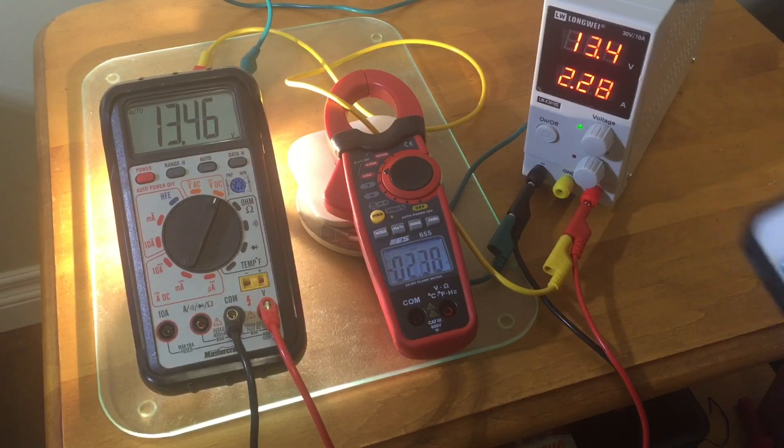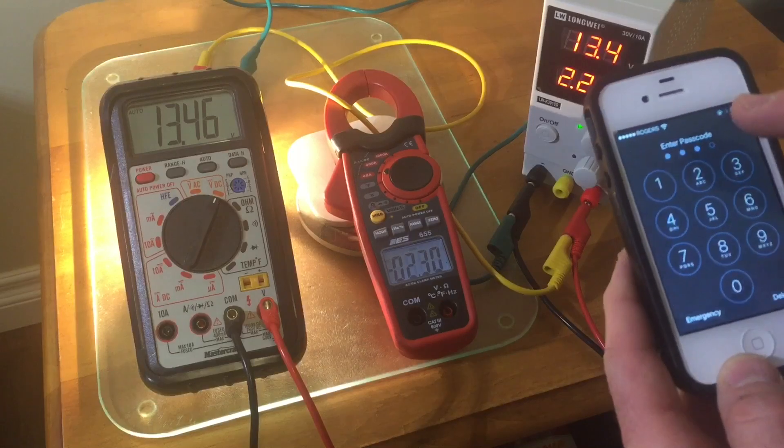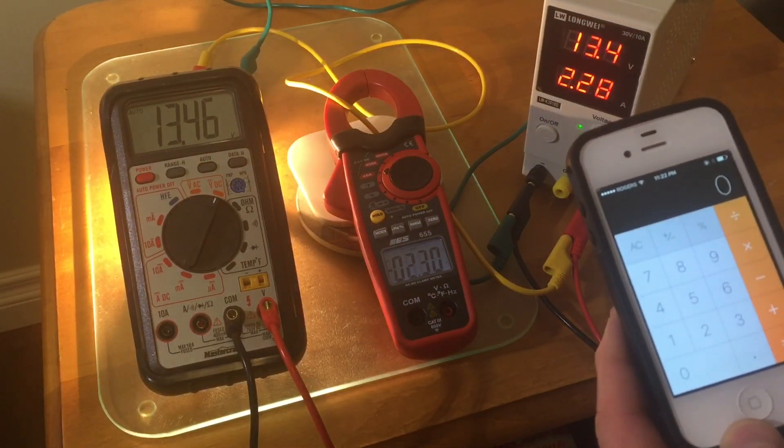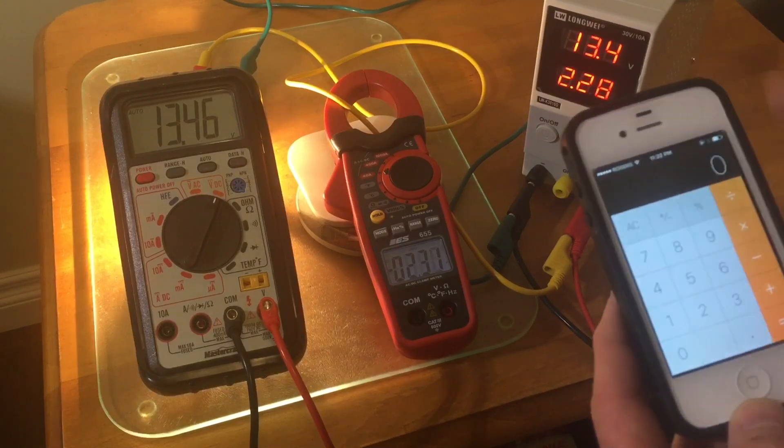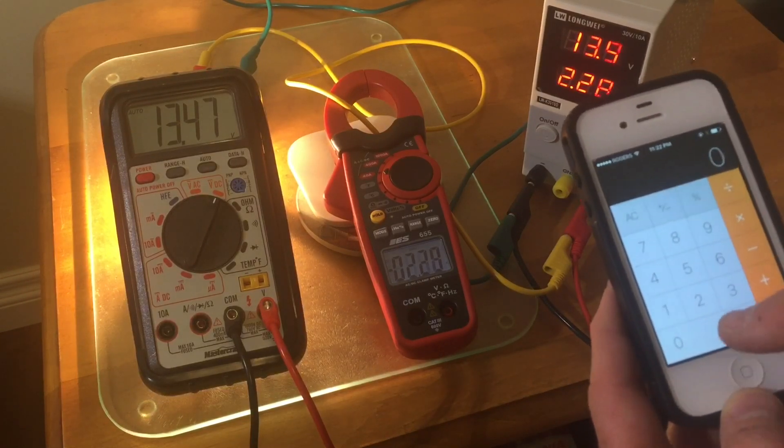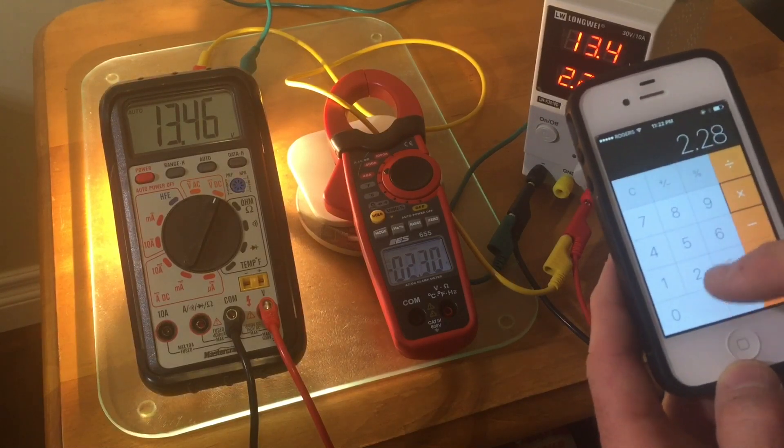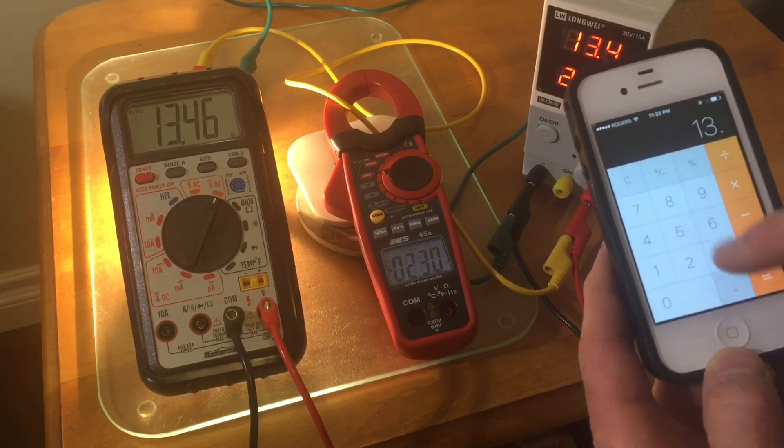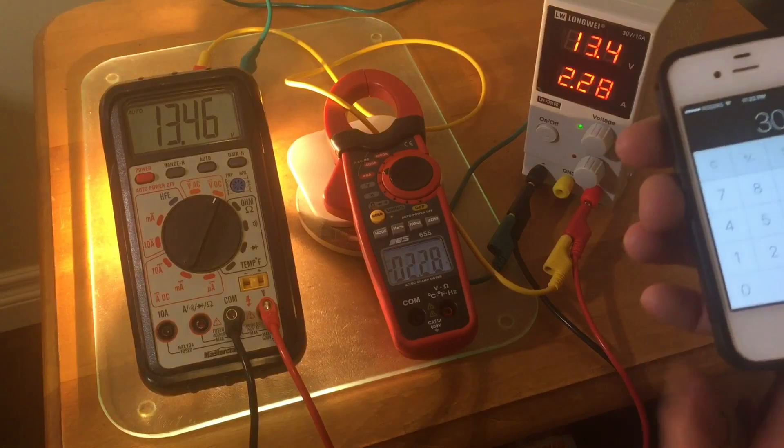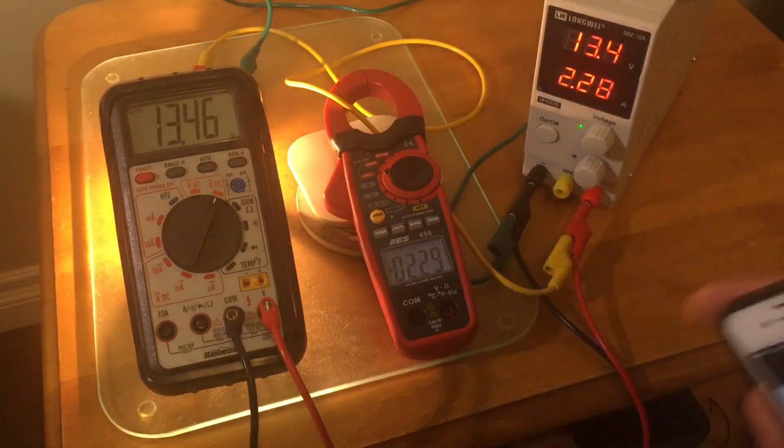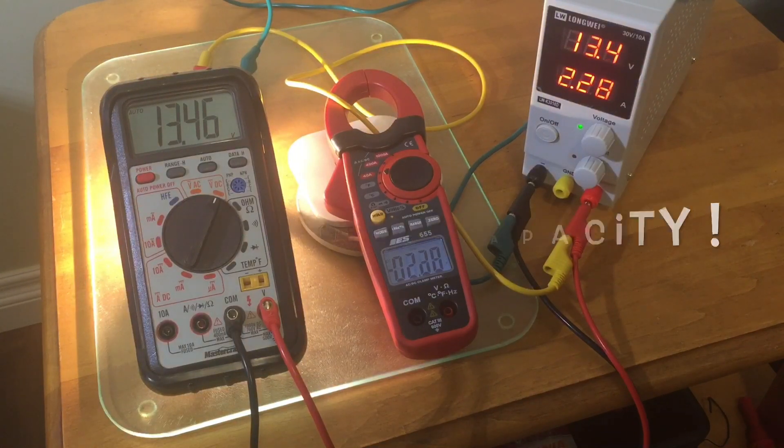Last time I checked, power is current times volts. So we've got 2.2 amps—pretty much bang on. There's a 30-watt load on it, and it's just cycling the fan on and off.